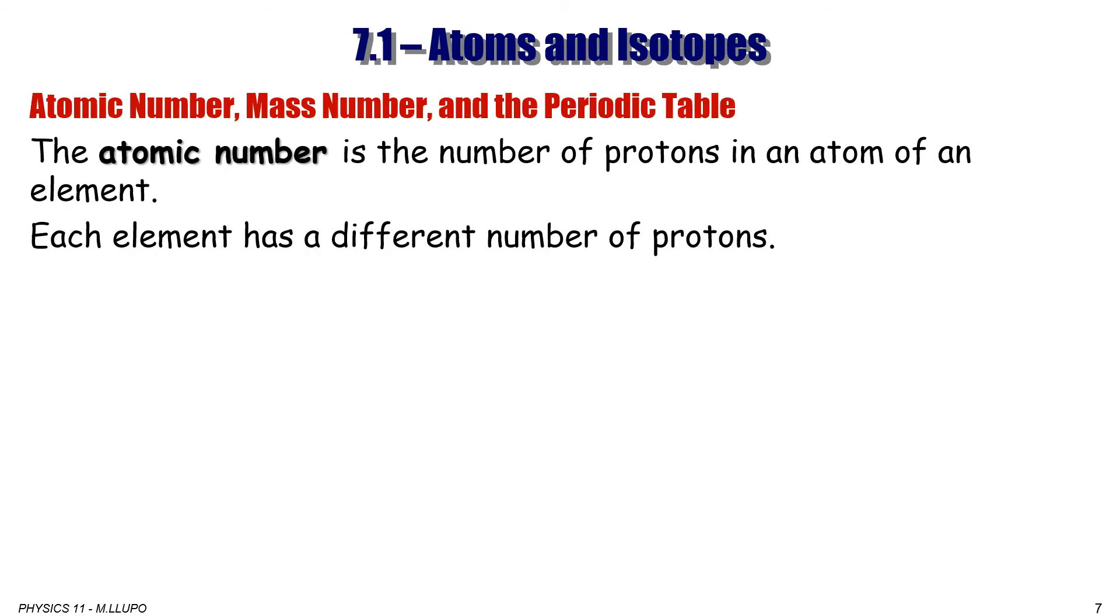Let's talk about atomic number, mass number, or atomic mass, and the periodic table. For example, the atomic number is the number of protons in an atom of the element. Each element has a different number of protons.